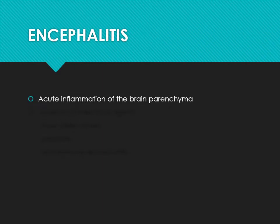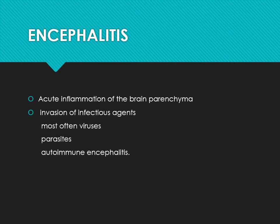So what is encephalitis? It is an acute inflammation of the brain parenchyma, and usually this encephalitis is accompanied by meningitis also, where there is involvement of the meninges. For encephalitis, the most common reason is an infectious agent — usually viruses — though sometimes they could be parasites or it could be autoimmune.